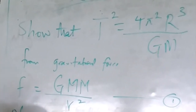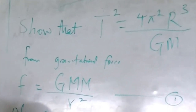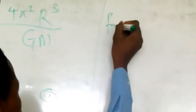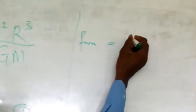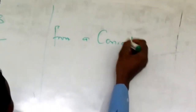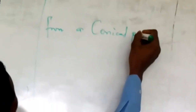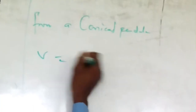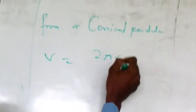From the conical pendulum, we have v equals 2πr over T — that is equation 4. We will now substitute this into equation 3.